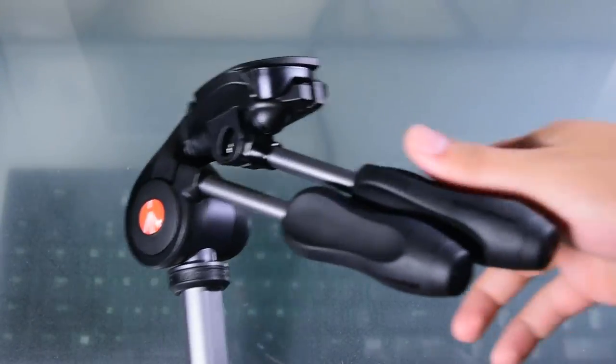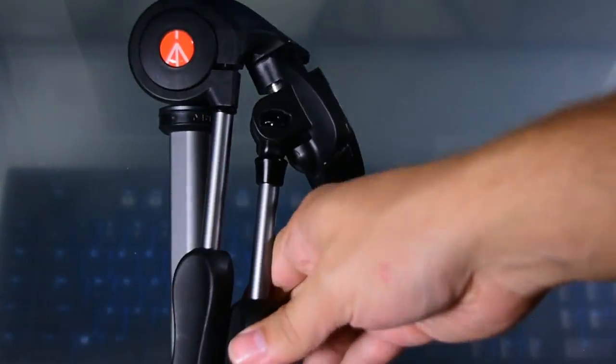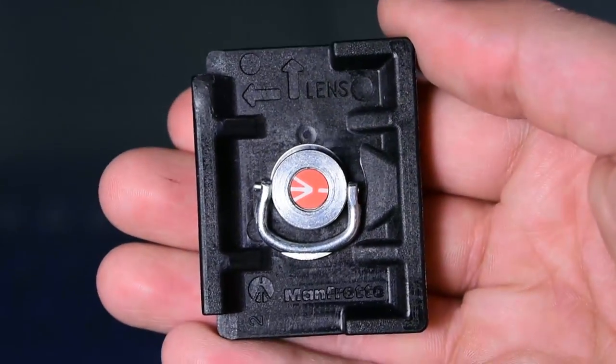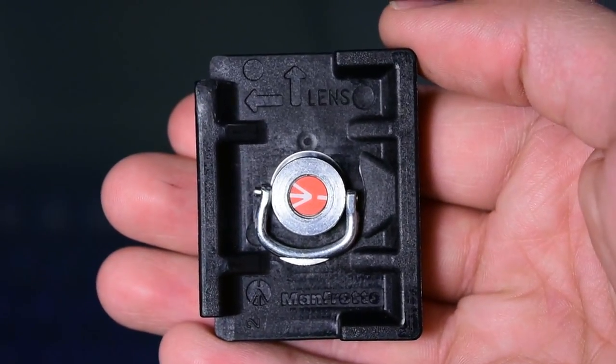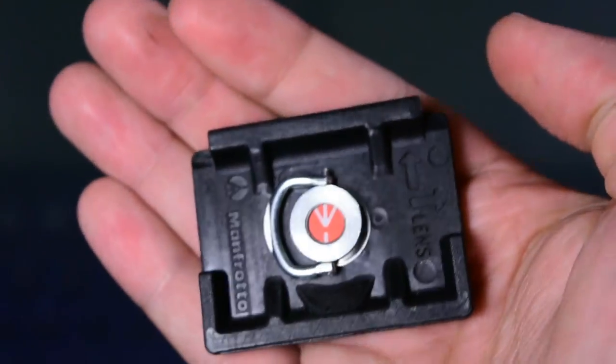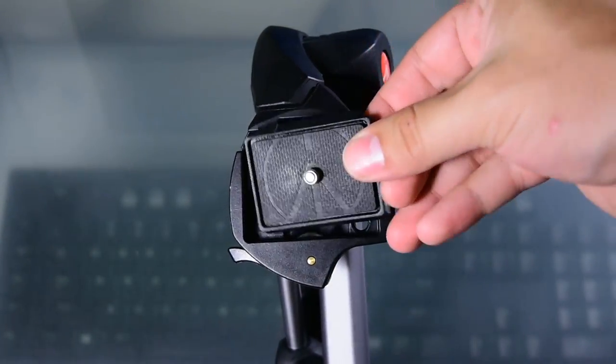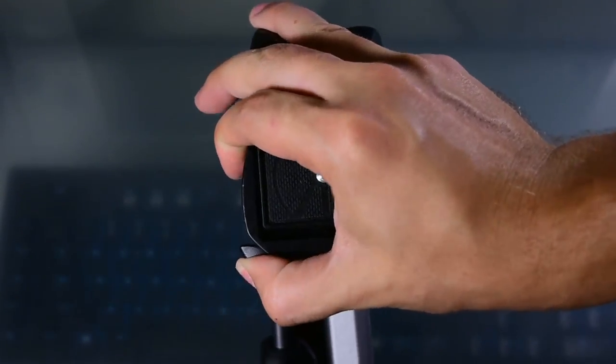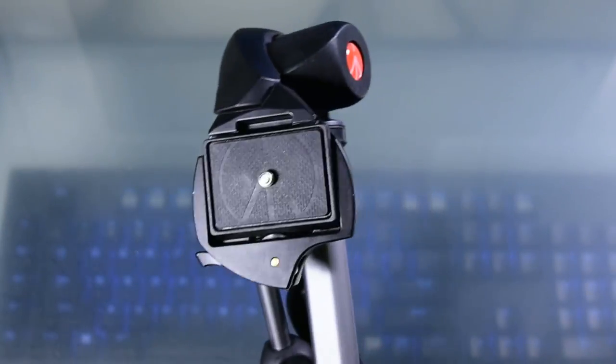On the bottom of the quick release plate, it's clearly indicated which way the camera lens should be facing. Once the plate is on the camera, placing the quick release plate on the tripod is as simple as inserting the front first, opening the lock to allow the rear to enter, and then re-locking it.